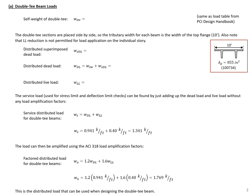First we'll look at the double T-beams and the load on these beams. We'll start by finding the self-weight: 0.150 kips per cubic foot times the area of our double T-beams, 855 square inches, times one square foot divided by 144 inches squared, giving us a self-weight of 0.891 kips per foot. This matches the load from the load tables in the PCI design handbook for this section.